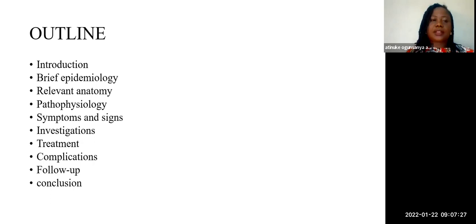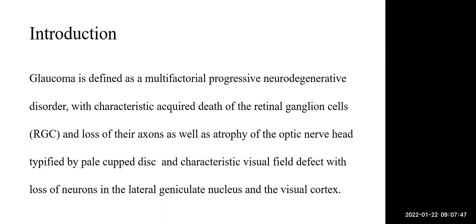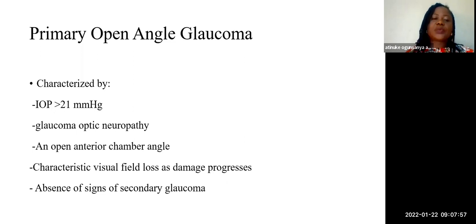Glaucoma is defined as a multifactorial progressive neurodegenerative disorder with characteristic acquired death of the retinal ganglion cells and loss of the axons, as well as atrophy of the optic nerve head, typified by the pale cupped disc and characteristic visual field defect. This results in loss of neurons in the lateral geniculate nucleus and visual cortex. Primary open-angle glaucoma is characterized by intraocular pressure greater than 21 mmHg, characteristic glaucomatous optic neuropathy, open anterior chamber angle on gonioscopy, characteristic visual field loss as damage progresses, and absence of signs of secondary glaucoma.